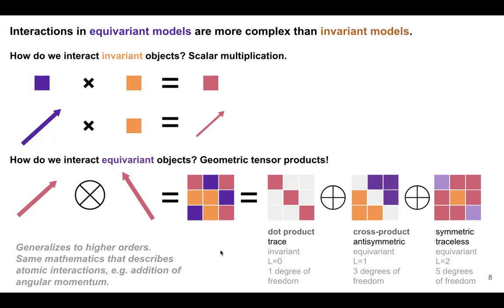This gives a flavor of the fact that when dealing with equivariance, your multiplication operation actually changes. Anytime you multiply objects in a model — whether a neural network or anything else — this has to change.